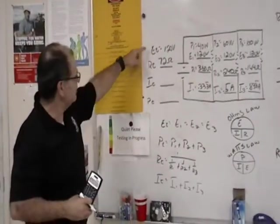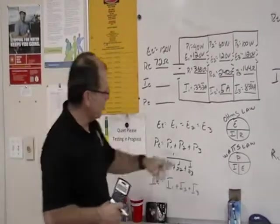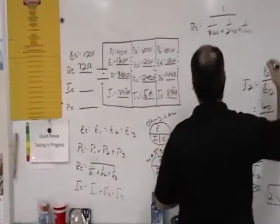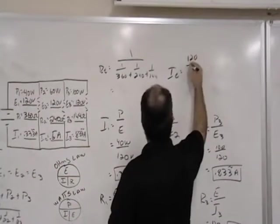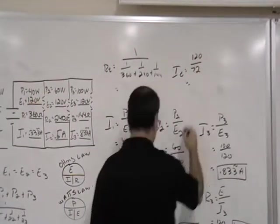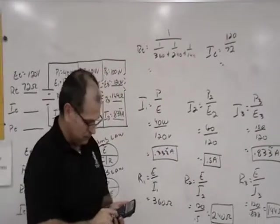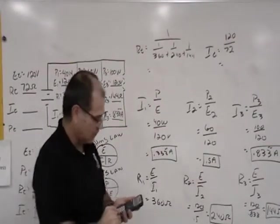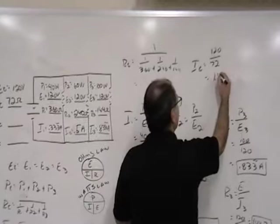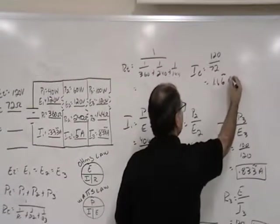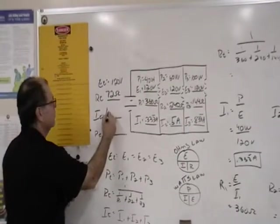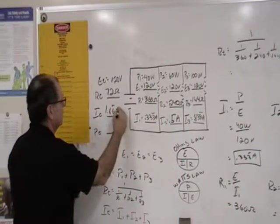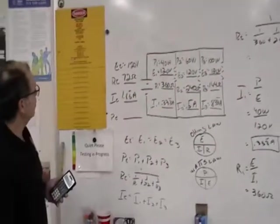Solving for IT, ET divided by RT using Ohm's Law. So total current is equal to our total voltage, which is 120 divided by 72 ohms, and it gives us 1.66 repeating amps.